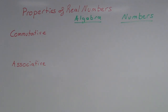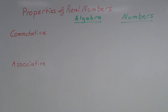In this video I'm going to talk about properties of real numbers — just two properties this time: the commutative property and the associative property. This is a little bit misleading, because commutative and associative both have subcategories. There's the commutative property of addition and the commutative property of multiplication, and the same for associative. So actually there are four different properties here.